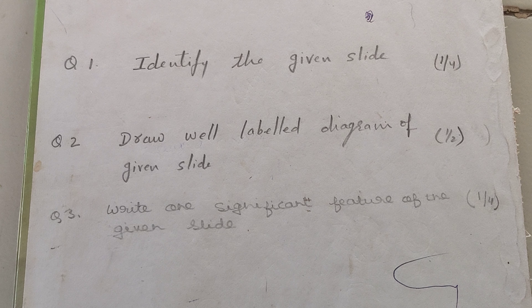In the second spot you will get a microscope with one slide. After observing that slide, you have to answer the given questions. First, identify which slide is given — in the second specimen you will get either a testes or an ovary slide. So first of all, you have to see which slide it is and then answer whether it is a testes slide or an ovary slide.